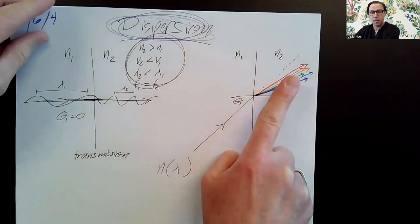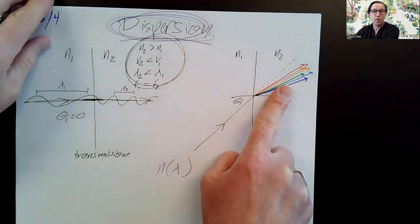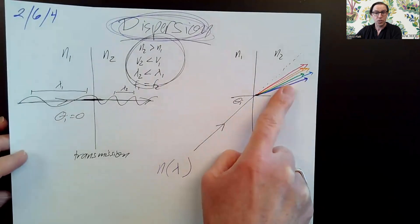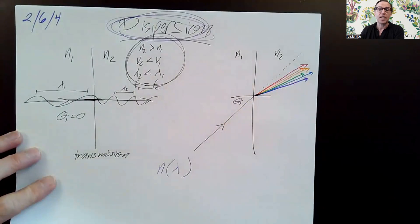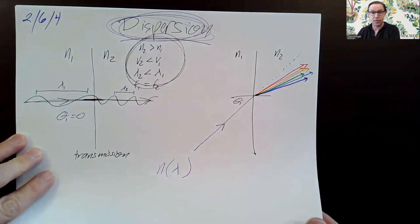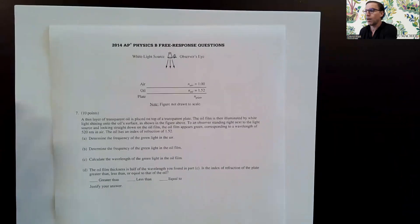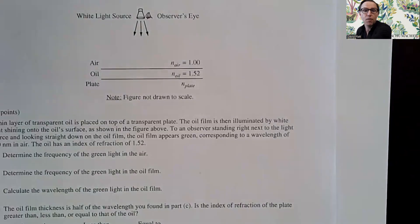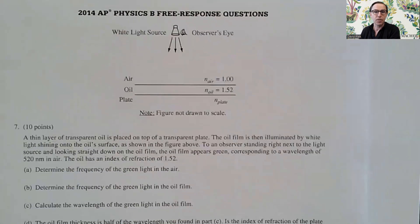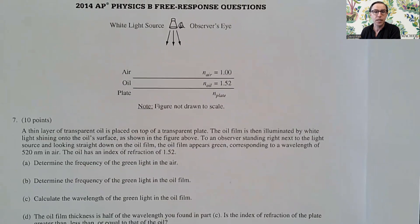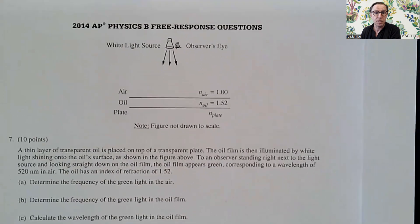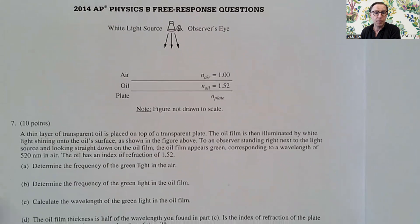It is important to remember that purple changes direction the most. That'll help us answer a question in the sample problem in just a few minutes. Here's a sample problem from 2014, which was on the AP Physics B exam — the last question that year. AP Physics B is a course that doesn't exist anymore.